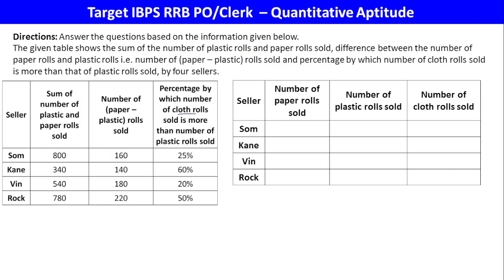First of all, let's find plastic (A) and paper (B). Given A plus B equals 800, and B minus A equals 160. Adding: 2B equals 960, so B (paper rolls) equals 480. Then A (plastic) equals 480 minus 160 which is 320.